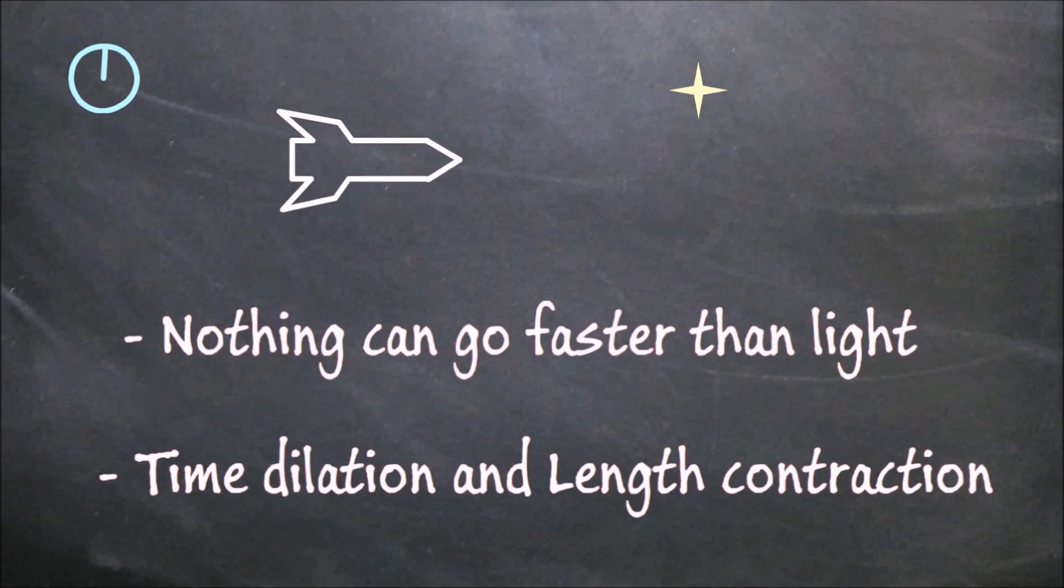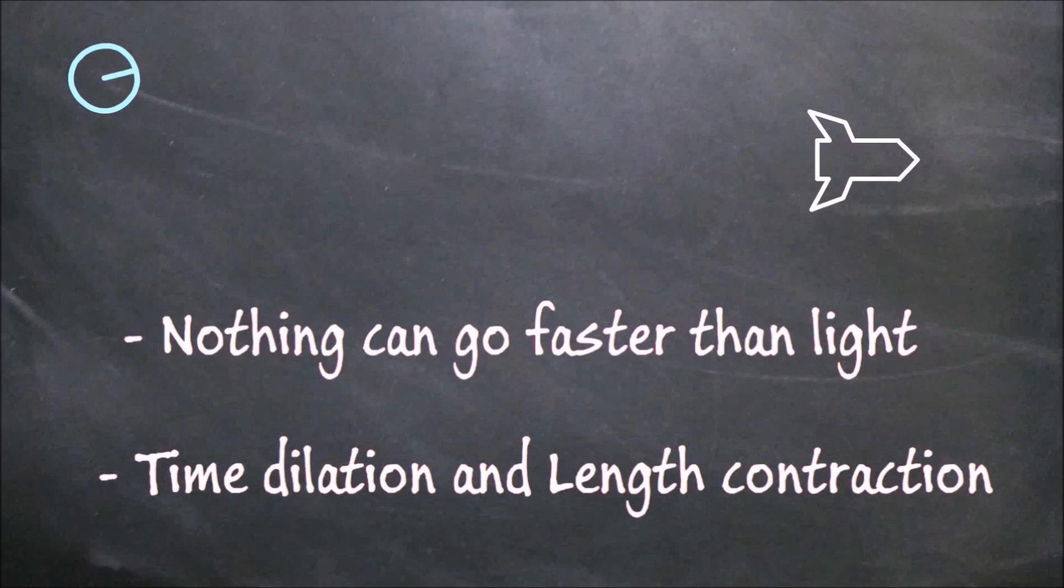In Part 1 of the Special Relativity series, two points were brought up. Nothing can travel faster than light, and time slows and objects contract when they travel very fast.